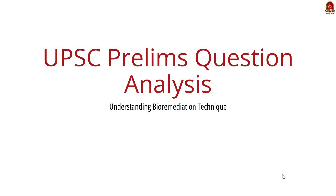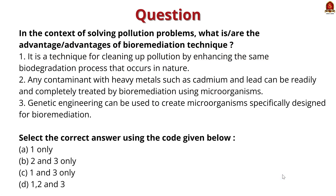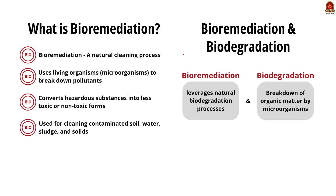Look at this previous year prelims question. To answer this question we have to know about what is bioremediation. Bioremediation is a treatment that uses naturally occurring organisms to break down hazardous substances into less toxic or non-toxic substances. It uses microorganisms to degrade organic contaminants in soil, groundwater, sludge and solids. It is most commonly used to clean up pollutions by enhancing the same biodegradation process that occurs in nature. So statement one is correct.